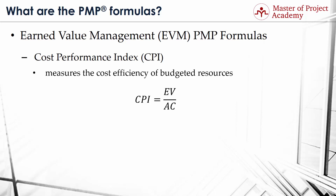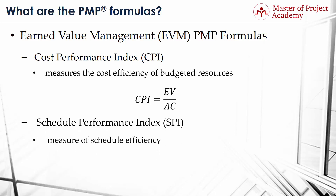PMP formula number 6: Schedule Performance Index or SPI. The Schedule Performance Index is a measure of schedule efficiency. It represents the ratio of earned value to planned value, and is one of the most common PMP formulas for control schedule. Its aim is to measure how efficiently the project team is accomplishing the work. Accordingly, its formula is: SPI equals EV divided by PV.